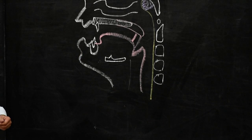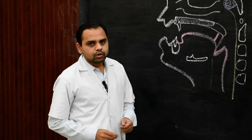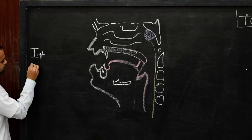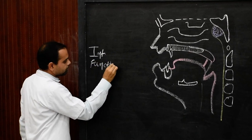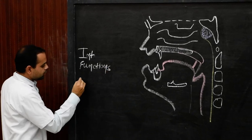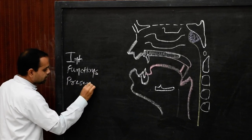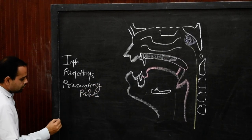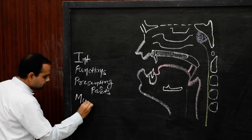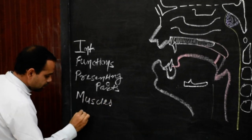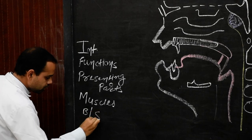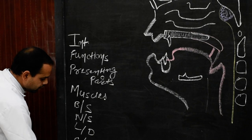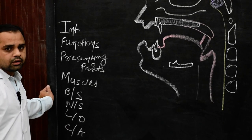Good morning everyone. Today I will discuss about the tongue. Points of discussion: first will be introduction, second will be function, third point is presenting parts or external features of the tongue, fourth one is muscles of the tongue, then blood supply, nerve supply, lymphatic drainage, and clinical anatomy. These are the headings under which I will discuss about the tongue.